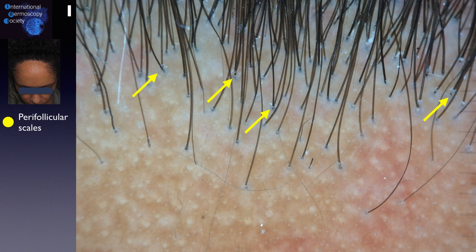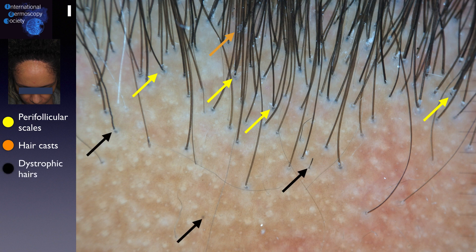In addition, tricoscopy shows perifollicular scales and some areas revealing hair casts around the shaft. These dark areas point to dystrophic hairs. The first finding represents moderate inflammation. As the inflammation gets worse, we can find broken hairs and black dots — that's why these are good biopsy sites.